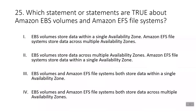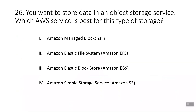Question twenty-five: which statements are true about Amazon EBS volumes and Amazon EFS file systems? The answer is EBS volumes store data within a single availability zone, while Amazon EFS file systems store data across multiple availability zones.